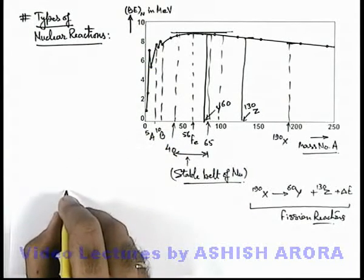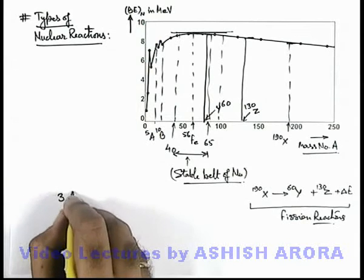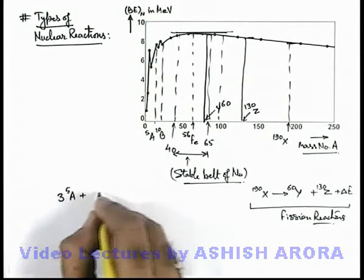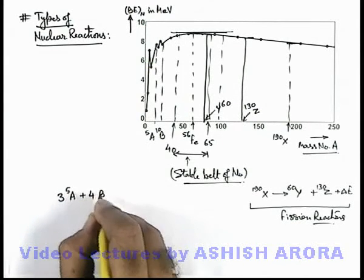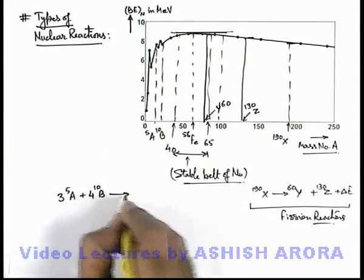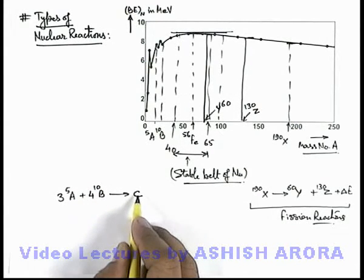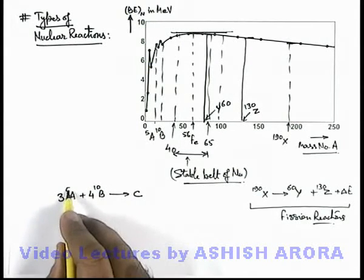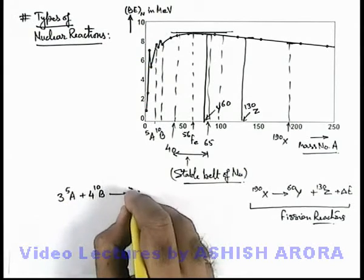Then in this situation, say if the nuclei of A combines with four nuclei of B, you can see another nuclei C will be obtained, which will be having mass number 5 plus 40, this will be 55.